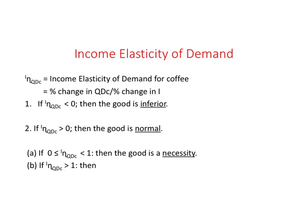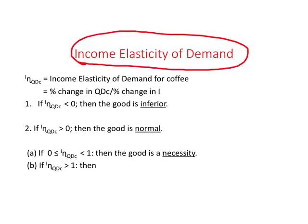The next elasticity we look at is income elasticity of demand. The question we ask is: by how much percent does demand for coffee change when income changes by 1%? In terms of a ratio, it is percent change in quantity demanded for coffee divided by percent change in income.